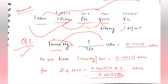Converting mmHg to atm means going in the backward direction. Simply divide 1 by 760, and we get 0.00131 atm. So 1 torr equals 0.00131 atm.